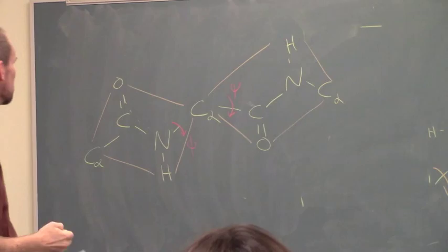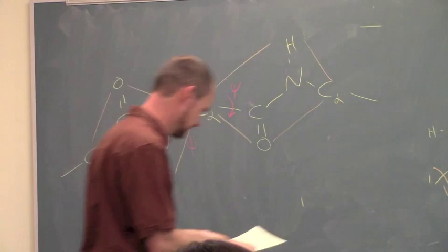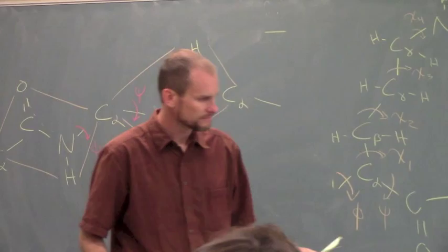We have two planes, and those planes can swivel back and forth using those angles. This is the phi angle - it's going to twist this plane around the alpha carbon. Here's the psi angle - it's going to twist the second plane around the alpha carbon. You have a set of planes that make a chain, and you have all these planes that you can twist around as you go down the chain. These are planar peptide units.